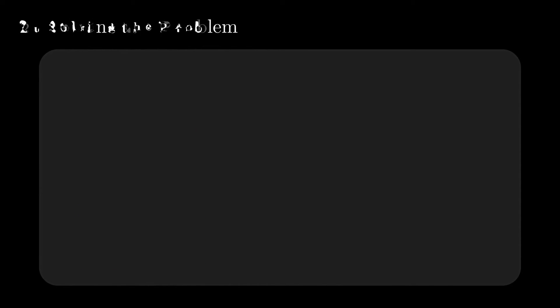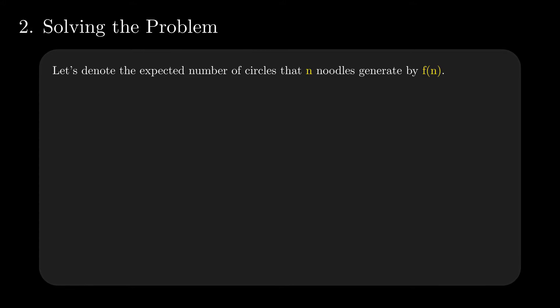So now, with the conviction that the end ball contains only circles, let's denote by f(n) the expected number of closed circuits that results from a ball of n noodles. Let's write some examples for values of n, starting with 1. When we only have one noodle, the only possibility is that we have one circle, so f(1) is equal to 1.